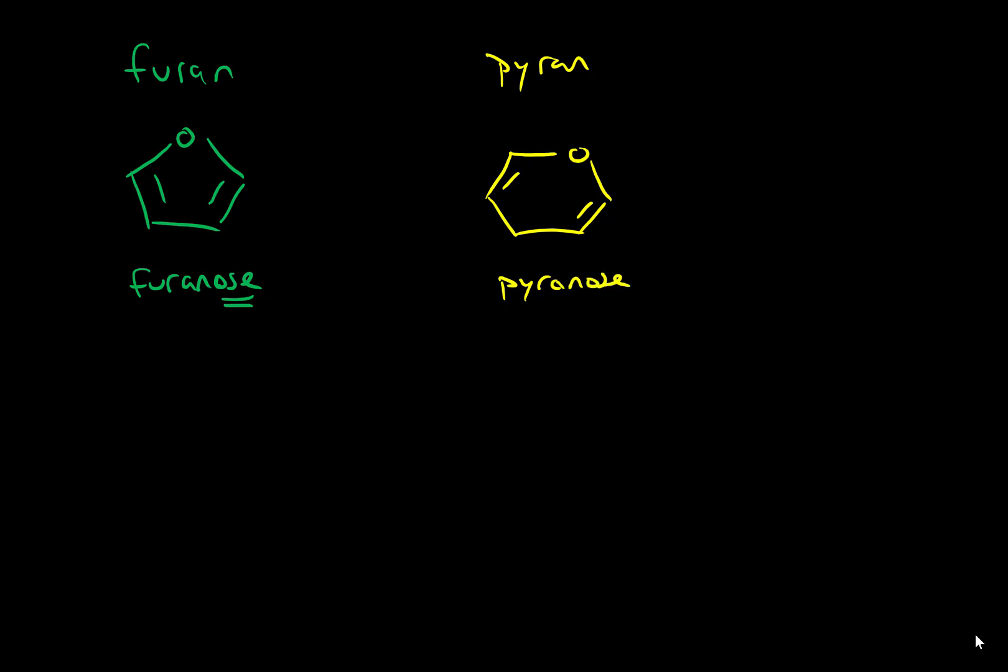So the two examples we saw of furanoses over the last couple of videos were D-ribose. And we also saw that when fructose cyclizes, it becomes a five-membered ring, so also D-fructose. And the one example of a furanose we saw was D-glucose. And there are many other examples, but these are the ones that we've seen up to this point.